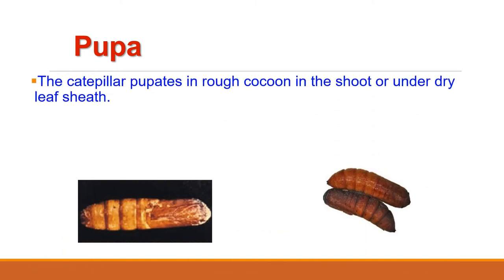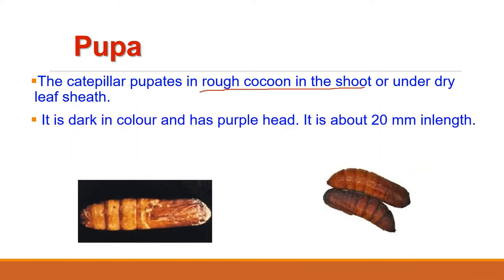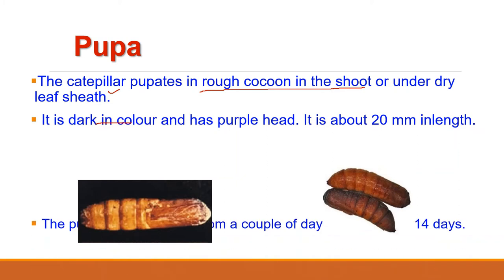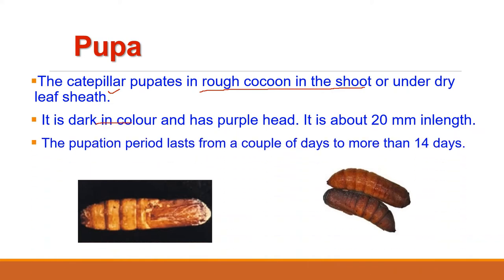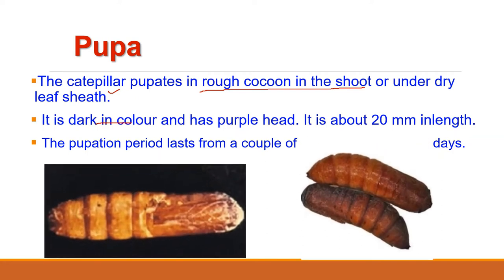The next stage is pupa. Fully grown caterpillars undergo pupation. They pupate in a rough cocoon of silk and debris within the shoot or outside under a dry leaf sheath. The pupa is dark brown in color and has a purple head. It is about 20 mm in length, and the pupation period lasts from a couple of days to more than 14 days.